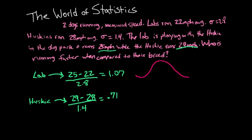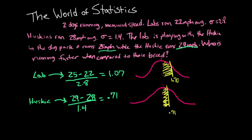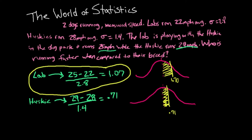Drawing these curves relative to their breeds, with the average in the middle, the lab is 1.07 above and the husky is 0.71 above. The lab is actually running faster when compared to its breed average. Even though the husky is running faster in miles per hour, it isn't deviating that far from its average speed, whereas the lab is 1.07 standard deviations above its average. The lab is the winner.